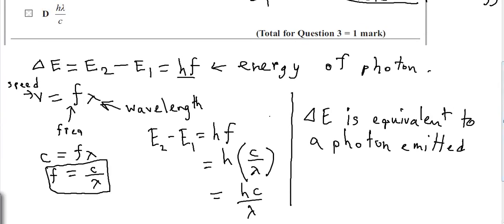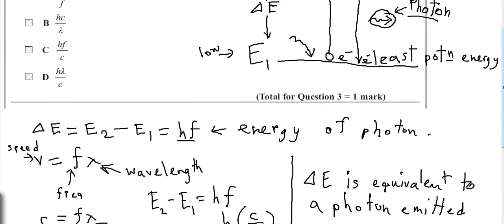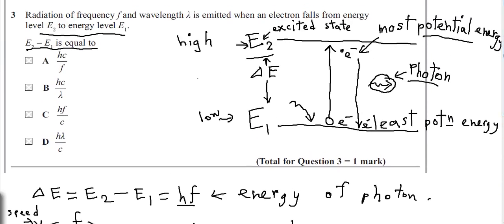Let us match this equation with the answer choices. That is: E2 minus E1 equals HC over lambda. So the answer should be B — HC over lambda. You have guessed it right. The answer is B, HC over lambda.